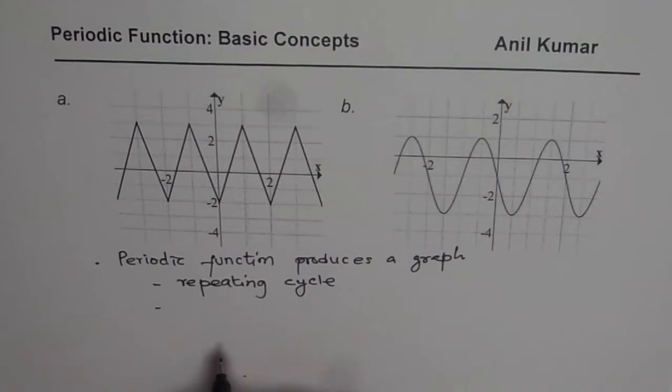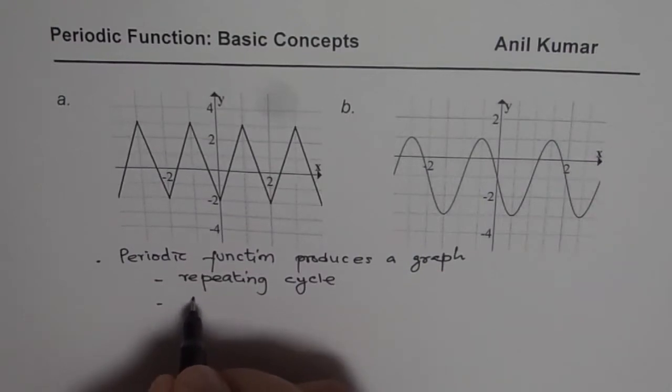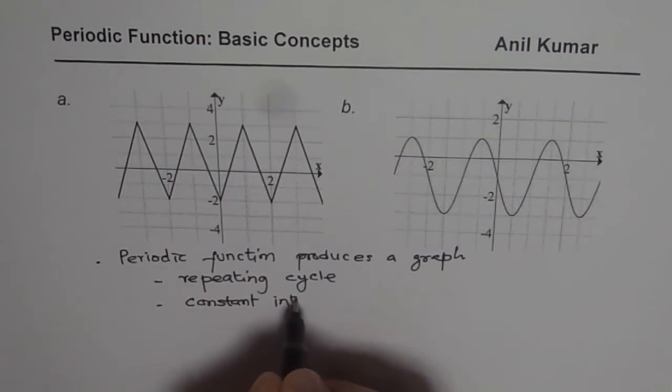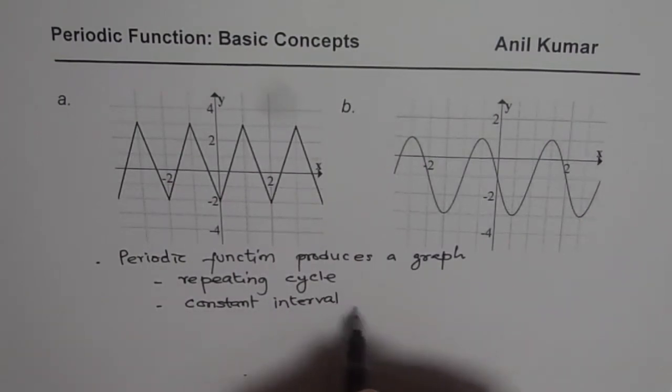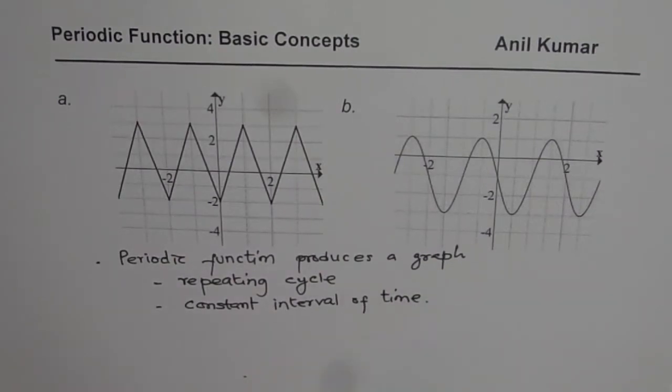And the second characteristic is that it repeats after a constant interval of time. So this repetition happens at a constant or consistent interval of time. So that is what a periodic function is.